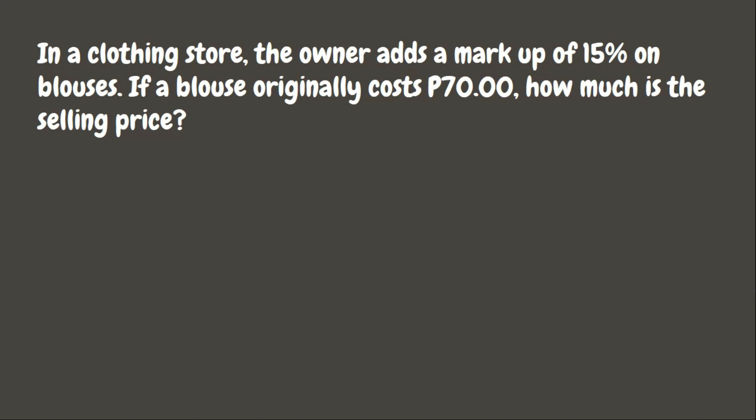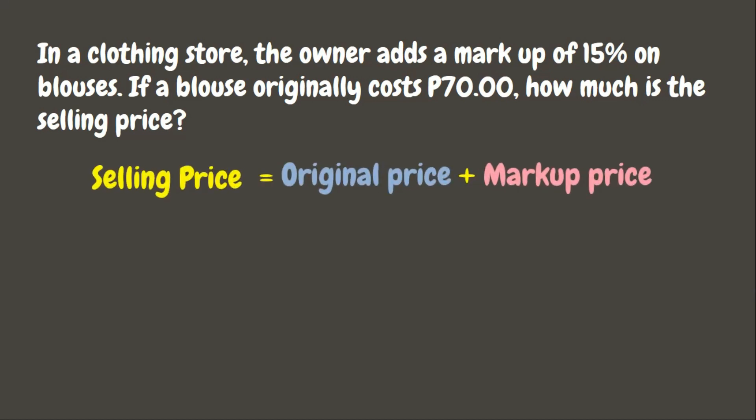In a clothing store, the owner adds a markup of 15 percent on blouses. If a blouse originally cost 70 pesos, how much is the selling price? Selling price is the amount or price after the markup price has been added to the original price. To solve for the selling price, we simply add the original price and the markup price: 70 pesos plus 10.50, which gives us 80.50.